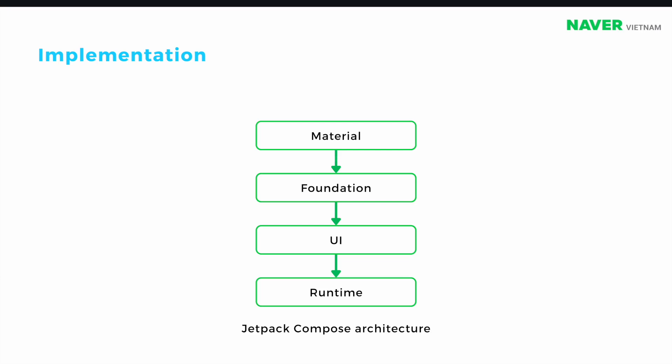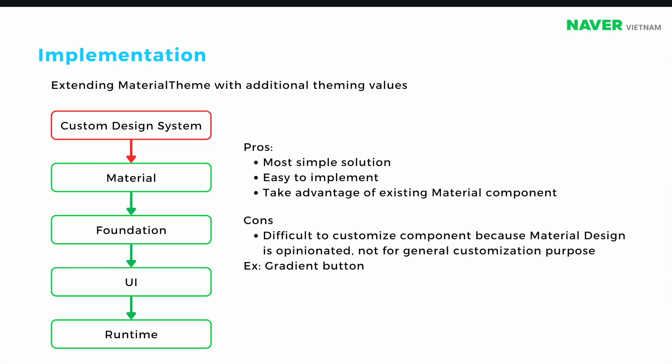Let's go through the first solution. Our design system will be a layer above Material Design, meaning it will extend the Material Design system. This is the simplest solution since it is easy to implement and we inherit all the benefits from Material Design. But it comes with drawbacks — because we are extending from Material Design, it's not easy to customize every component due to its limitations.